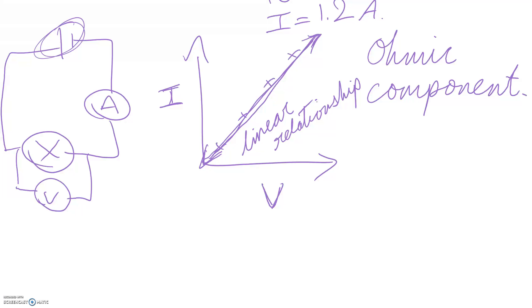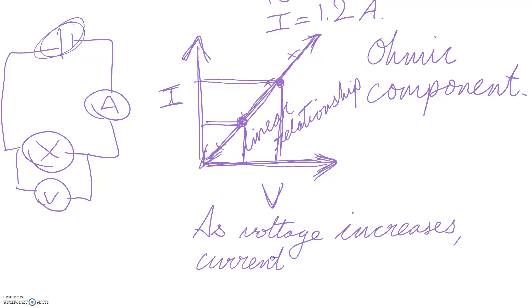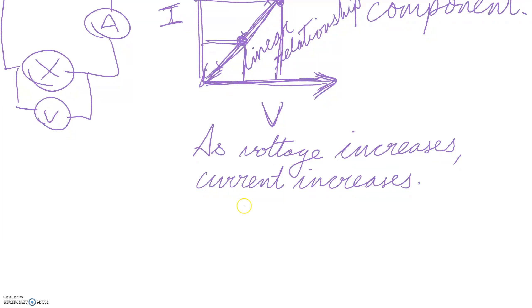Now if we were going to describe this relationship we would say as voltage increases, current also increases. And we can tell that because as voltage goes up our current values get higher. Voltage goes up, current value goes up. So as voltage increases, current increases. And how does it increase? Well it increases linearly.